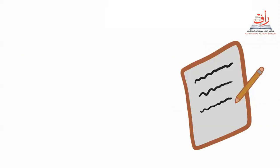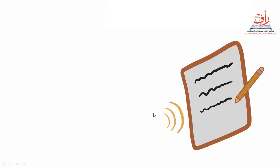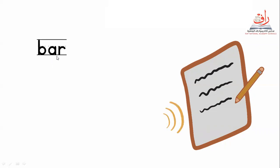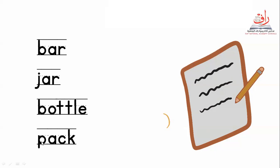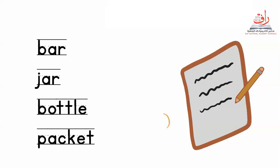Today we have a dictation for students who were absent. You can go to see your dictation and write the words again. Let's see how we write the words between the lines. Number one: bar. Number two: jar. Number three: bottle. Number four: packet. Please write between the lines — you should write very neat.